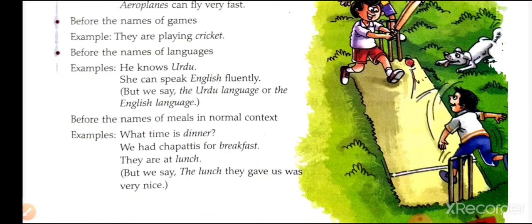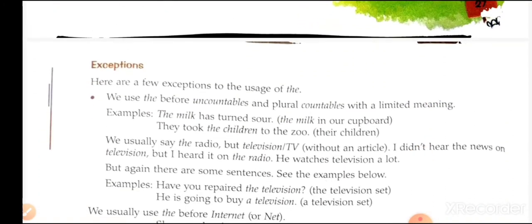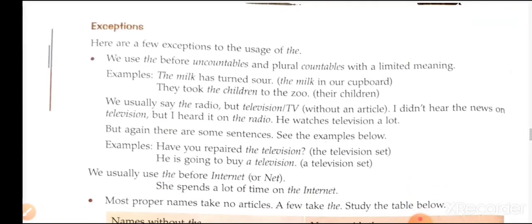Before the names of meals in a normal context: 'What time is dinner?'; 'We had Japanese food for breakfast'; 'They are at lunch.' But we say: 'The lunch they gave us was very nice.' Exceptions — here are a few exceptions to the use of 'the': we use 'the' before uncountables and plural countables with a limited meaning. Examples: 'The milk has turned sour' — meaning the milk in our cupboard. 'They took the children to the zoo' — meaning their children.